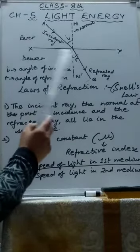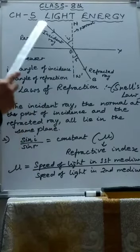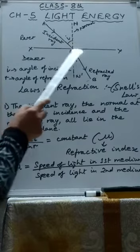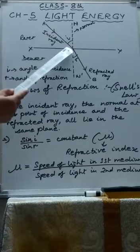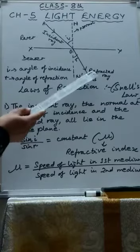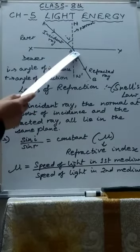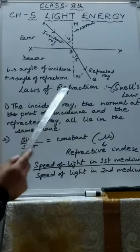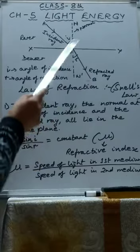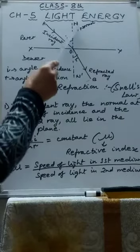Now, some important terms related to refraction of light. Suppose I have drawn a diagram and the ray is going from rarer to a denser medium, so it is bending towards the normal. The ray falling on the surface separating the two media is called the incident ray. The ray of light travelling in the other medium in the new direction is called the refracted ray. The perpendicular drawn on the surface at the point where the incident ray strikes is called the normal. The angle between the incident ray and the normal is called the angle of incidence, and the angle between the refracted ray and the normal is called the angle of refraction. The angle of incidence and angle of refraction are always measured along the normal.